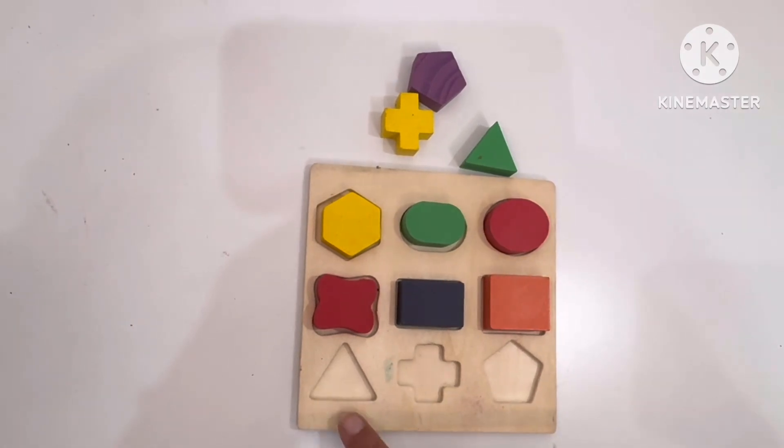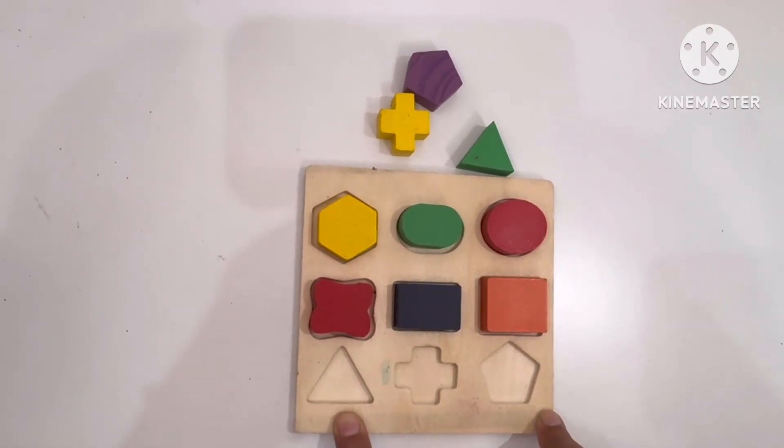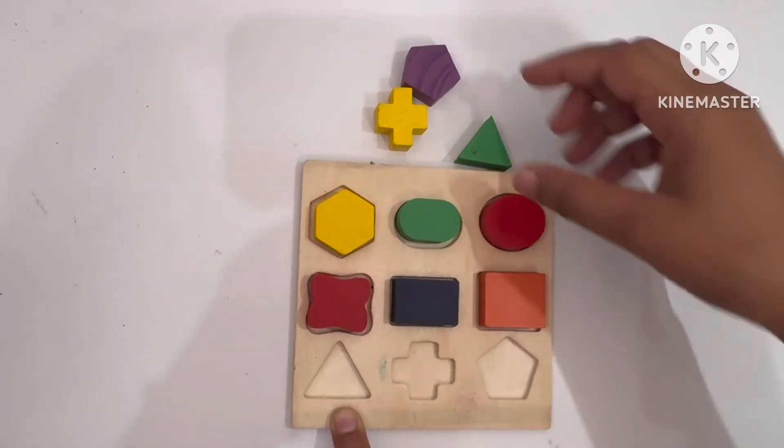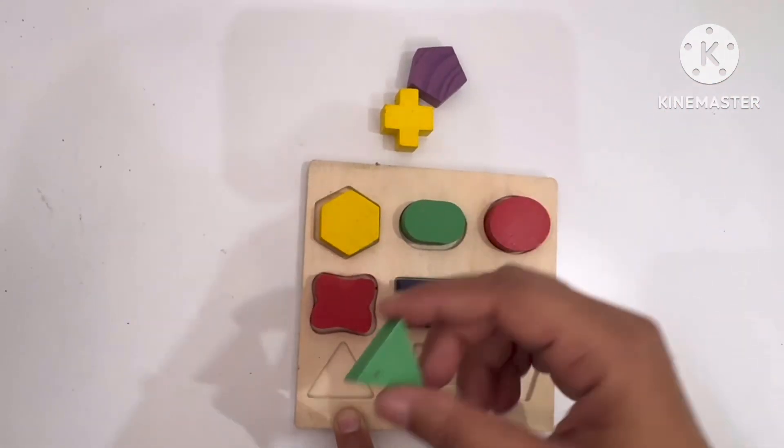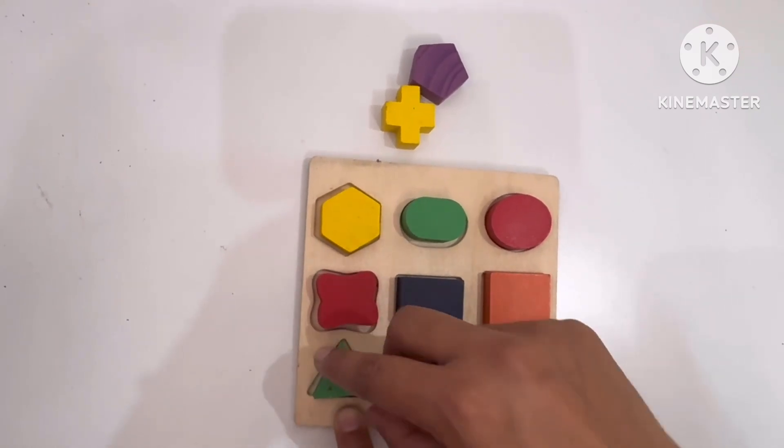Now the last row is left. And we have first one is the triangle. The triangle we have in a green color. Here, I am placing it. And it placed well.